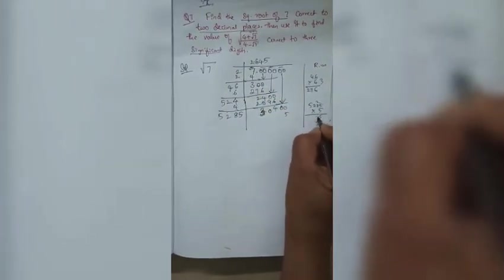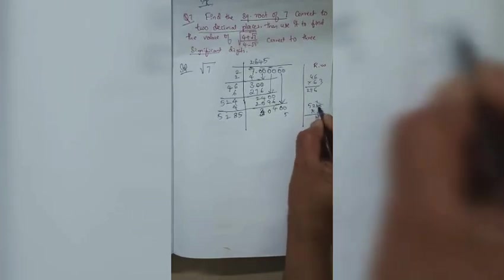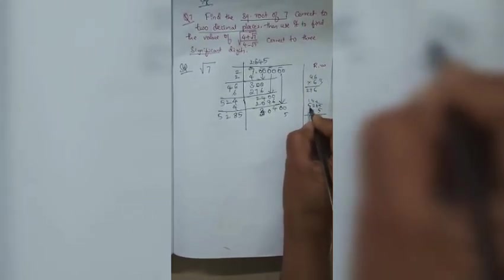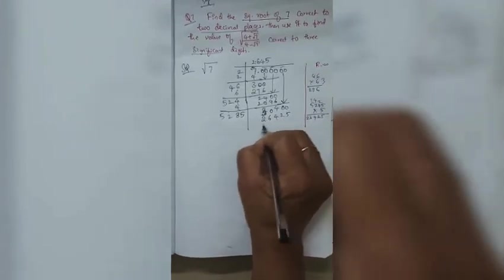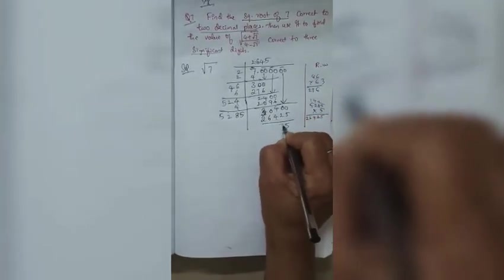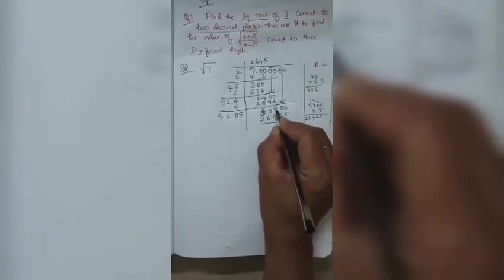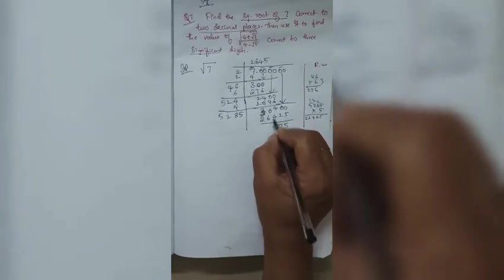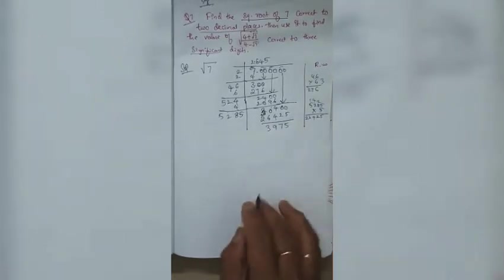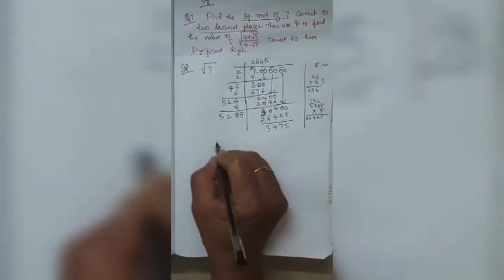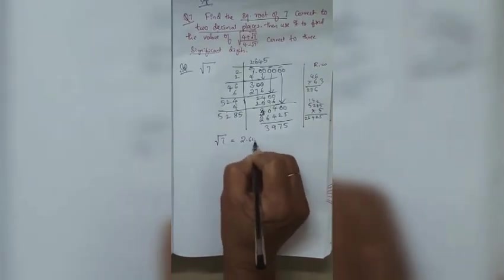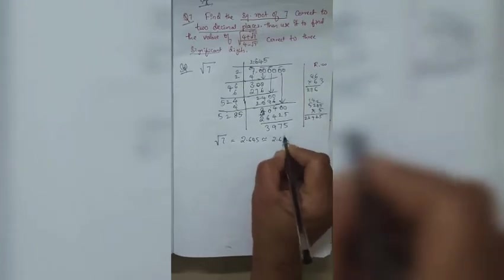Working through the multiplication: 5×5 = 25, carry; 5×8 = 40+2 = 42; 5×2 = 10; 5×5 = 25+26 = 26425. After subtraction the remainder is obtained. We stop here since we now have three decimal digits. So √7 = 2.645, which rounds to 2.65 correct to two decimal places.